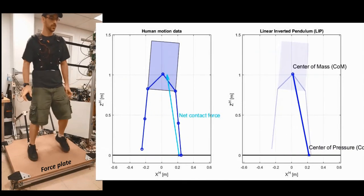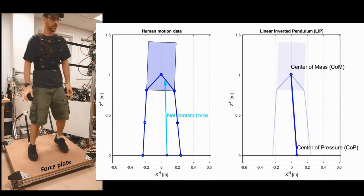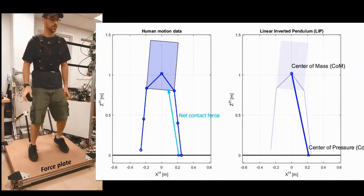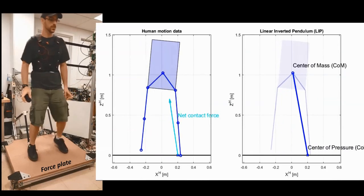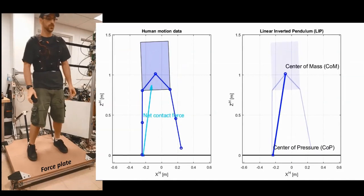We condensed this information using a simple model for leg locomotion, the linear inverted pendulum, which is represented by the line that connects the center of mass and the center of pressure.